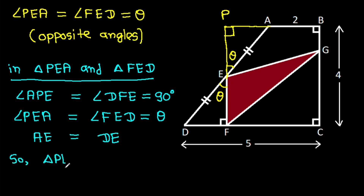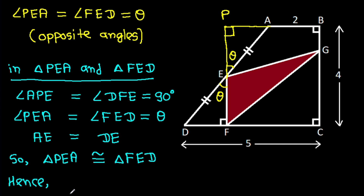So triangle PEA will be congruent to triangle FED. Hence PA will be equal to FD — suppose X.